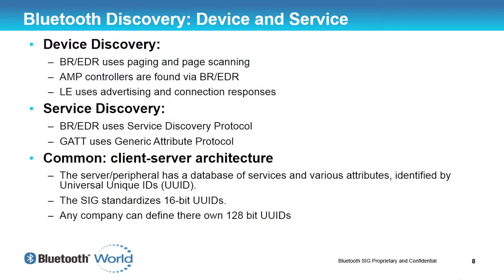For low energy, the first thing to consider is how we do device discovery. Device discovery is different depending on the technology. For BR/EDR, we use paging and page scanning — we send out ID packets and the other device scans for these and responds. With AMP, we don't do device discovery because 802.11 is not particularly good at finding other 802.11 devices without an access point, so we do all that discovery via BR/EDR. With LE, we use the advertising channels and then send a connection request to the paired device.